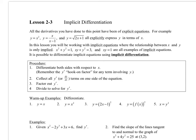Section 2.3, implicit differentiation. So far we've been taking derivatives of functions that are explicitly written — meaning y is solved in terms of x, with all the x stuff on the right-hand side. In this lesson, we're going to work with x and y all mixed together. For example: x squared plus y squared equals 1, xy plus y squared equals 3, or xy equals 1. These are implicit equations, and we want to take the derivative and solve for y prime.